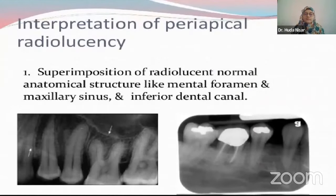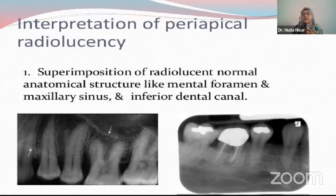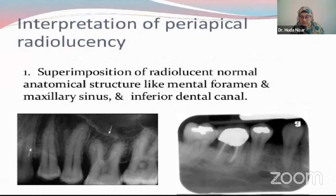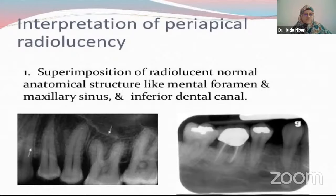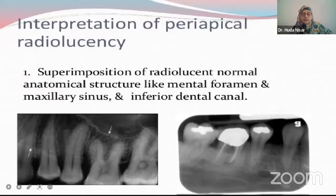For periapical radiolucencies, superimposition of radiolucent normal anatomic structures like the mental foramen, maxillary sinus, and incisive canal should be noted. If there would be any lesion, it would be associated with the tooth or around the tooth. The mental foramen is found in the premolar space area, so your first thought should not be something very invasive. The maxillary sinus dips in between the roots of the first molar and second molar. As you observe more and more radiographs, you will be able to differentiate a proper periapical lesion that requires intervention from normal anatomic structures.